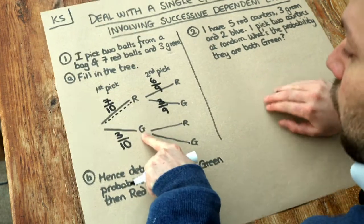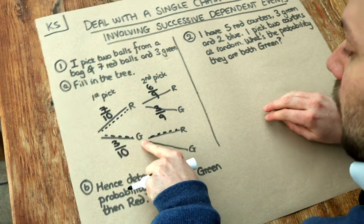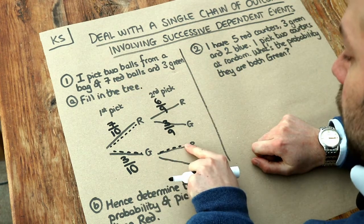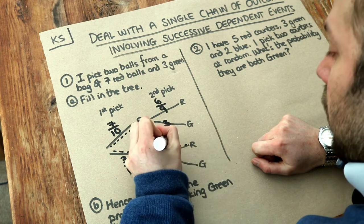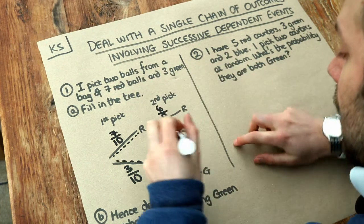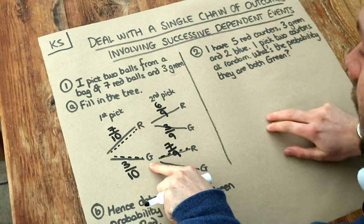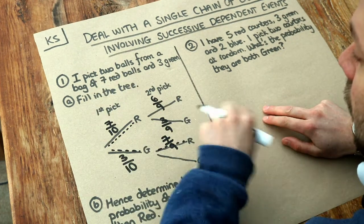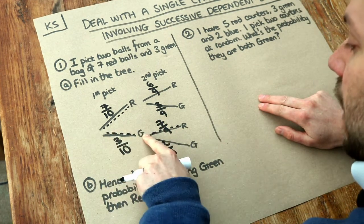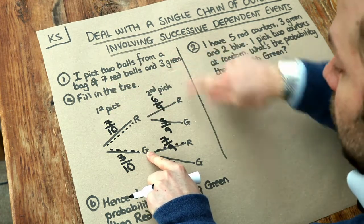Now what if we picked a green on our first pick? If we want green followed by red, we've now got two green left and seven red. The probability of getting red on the second pick is seven out of nine — still seven red balls since we didn't pick red first, but out of nine because we have one less ball overall. The probability of getting green is two ninths, because we've got two green left out of nine balls remaining.